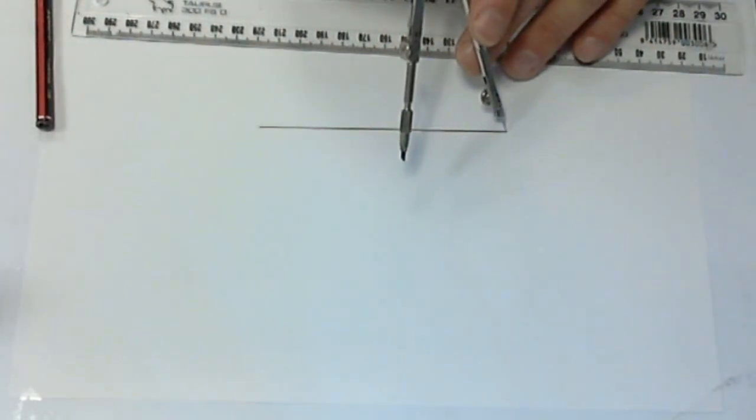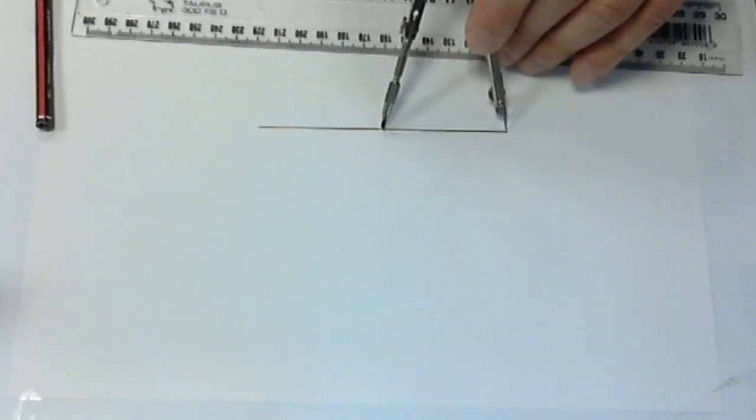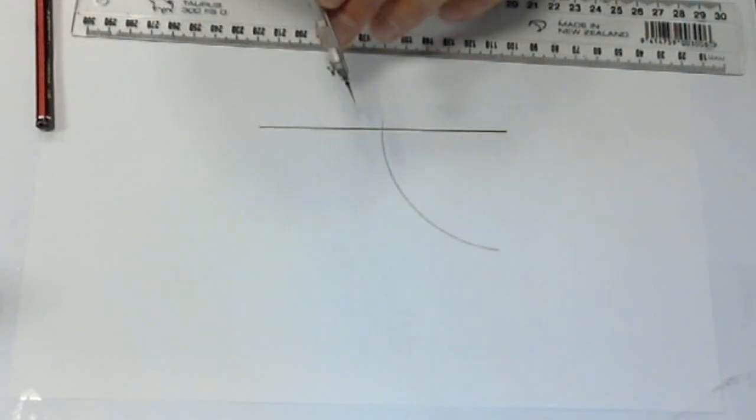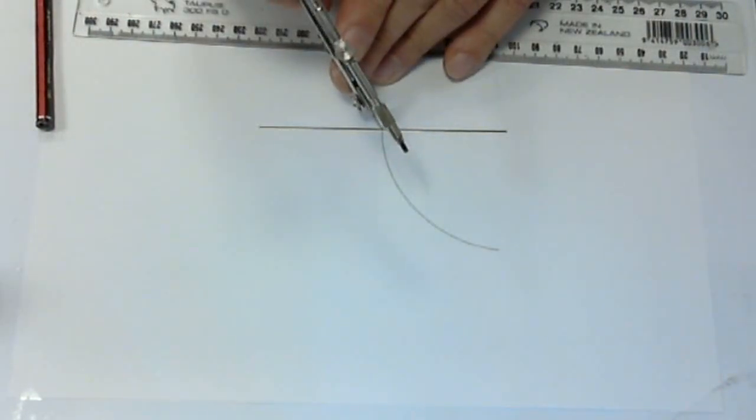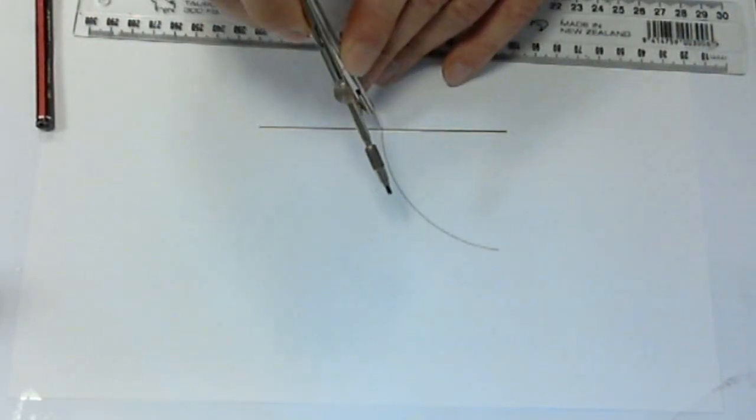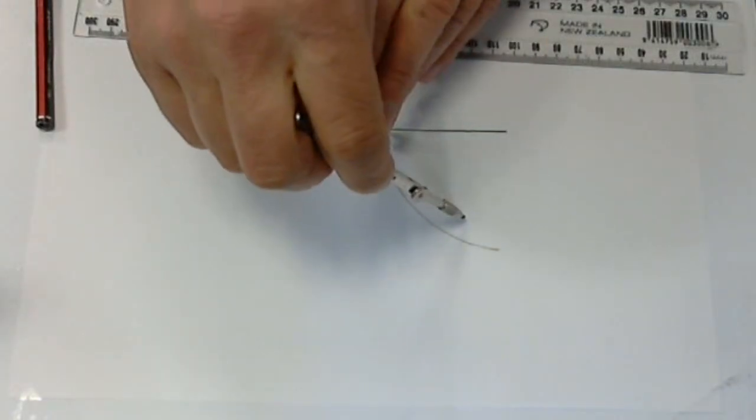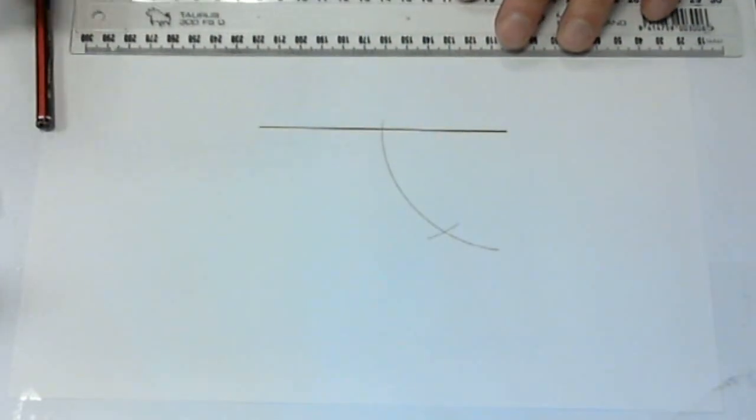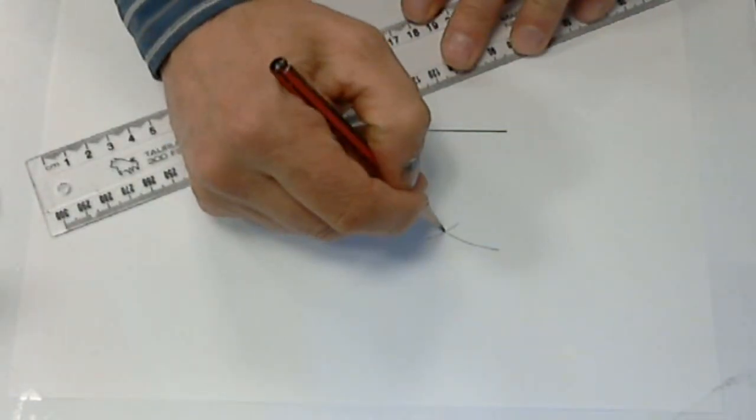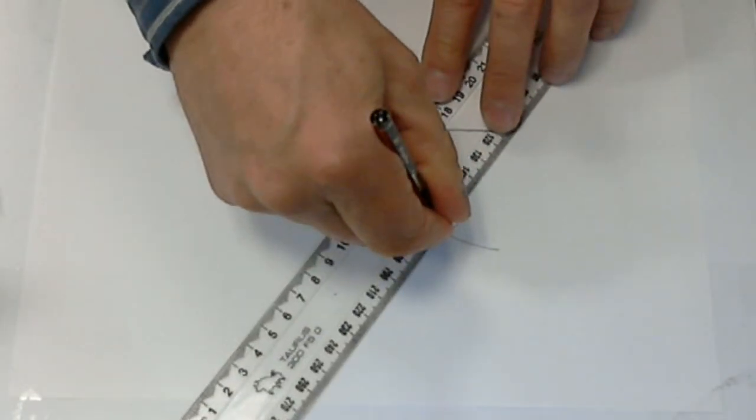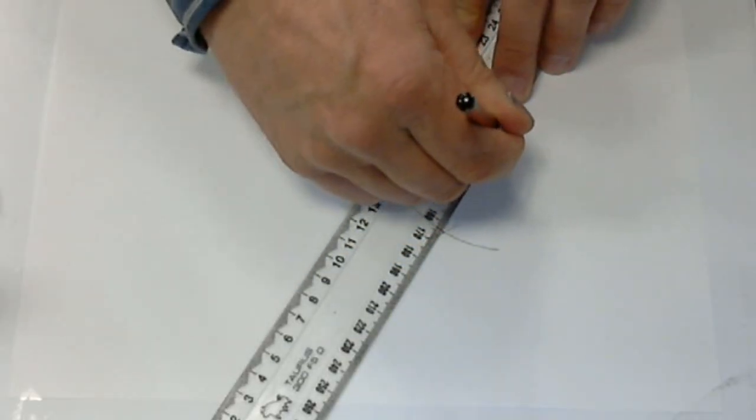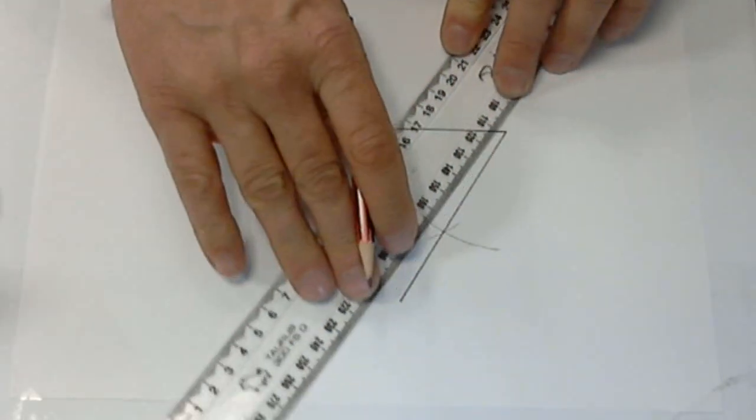Moving to the point where the first arc cuts the line, place the compass point there and find the point above the original line. This point will be at 60 degrees to the original start point. Drawing a line there, we now have a 60-degree angle.